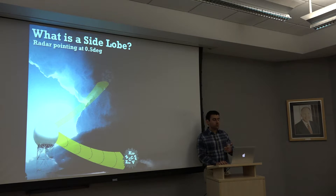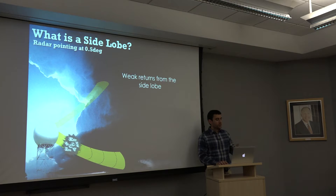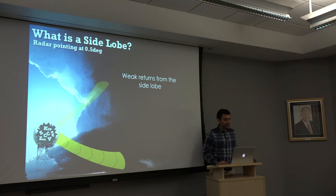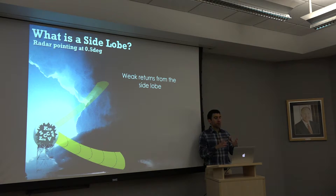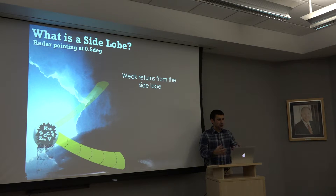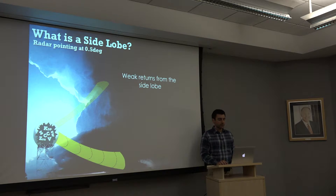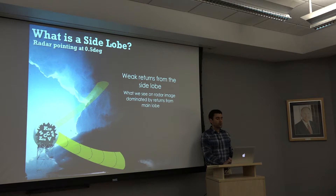Generally, we get weak returns back from the side lobe. The extra energy going out to areas besides where the dish is actually pointed is very low energy, so if there's not much there, we're not too concerned. What we get back is dominated by the main lobe where the radar is pointed. We only get weak returns from the side lobe and lots of good returns from our main lobe, so what we see on radar is what we're expecting.